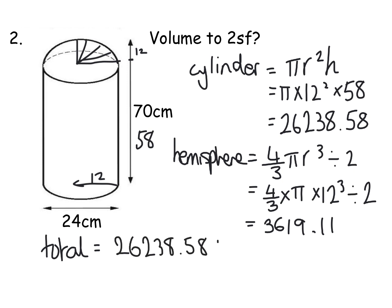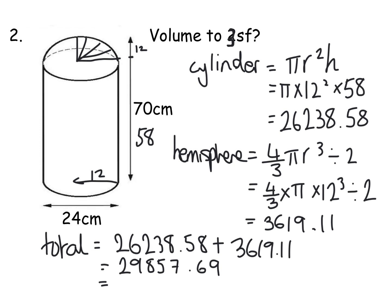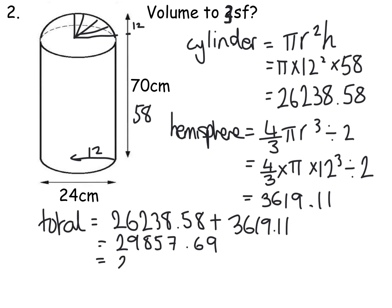Now you don't necessarily always need to write this down, but I'm doing it for the sake of your examples. And if you add them together, you get 29,857.69. And I'm just going to change this question to a three significant figure one and I'll explain why in a second. So to three significant figures, that would be, I'll get a bit more space here. That would give me 29, the 8 will change because of the 5, so it'll go to 29,900 cm cubed. Again, I've put my units in.